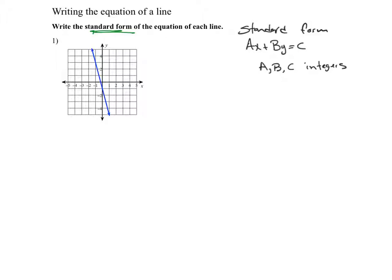I have this graph and I'm going to identify two points. The first one, point A, is going to be negative one, negative three. And point B is zero, negative one.